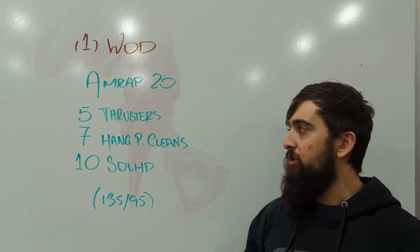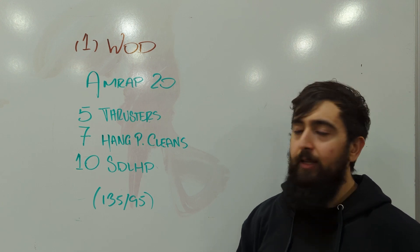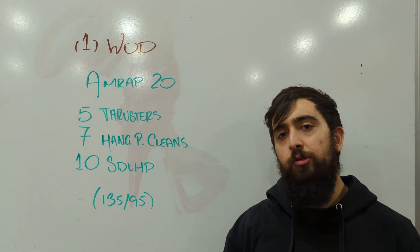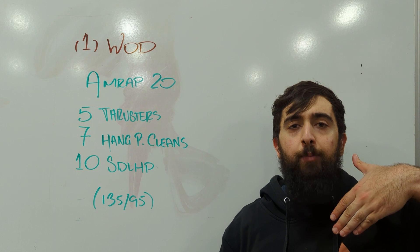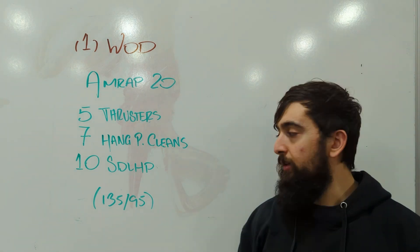Once we finish our thrusters, we're going to do seven hang power cleans and then go into sumo deadlift high pulls. Really using the legs to drive that bar up just below our collarbone area there.